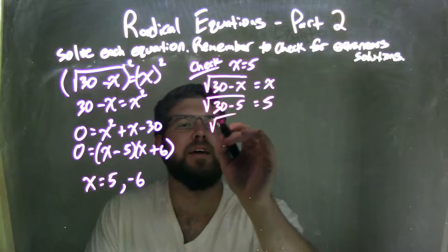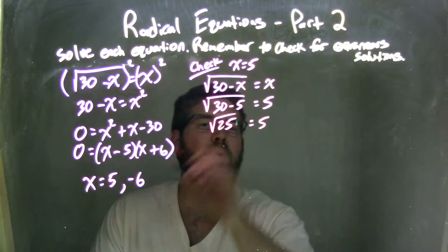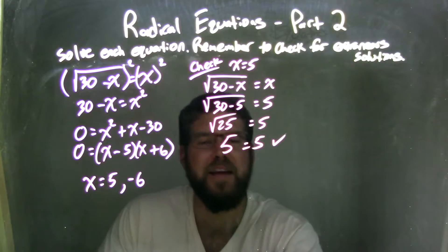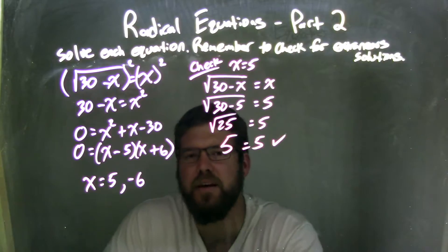30 minus 5 is 25, fantastic, and the square root of 25 is in fact 5. So we're good. Left and right are equal. We know x equals 5 is a true answer.